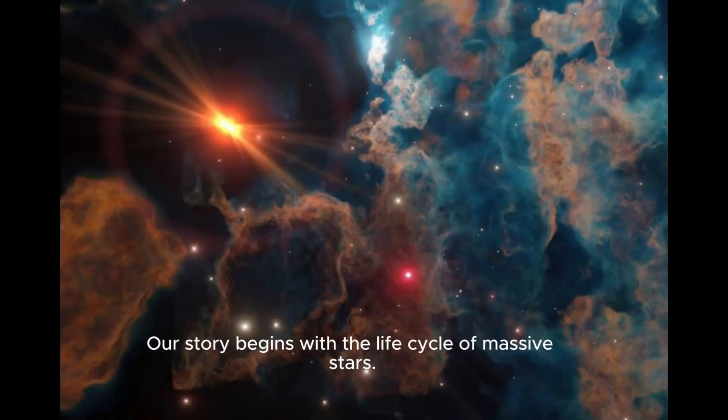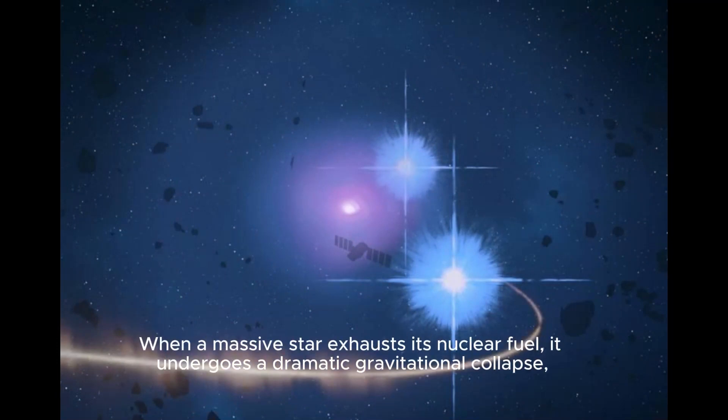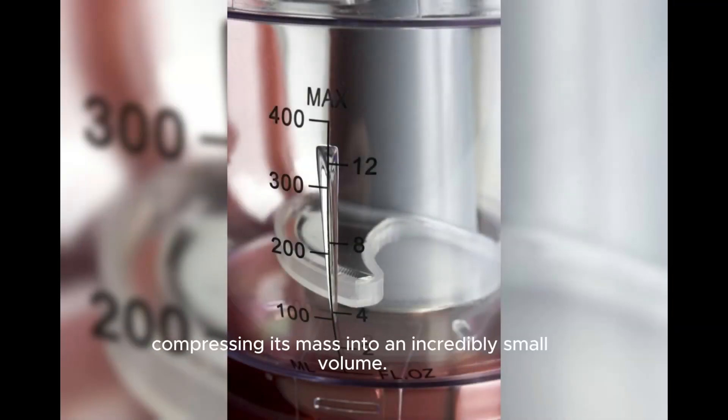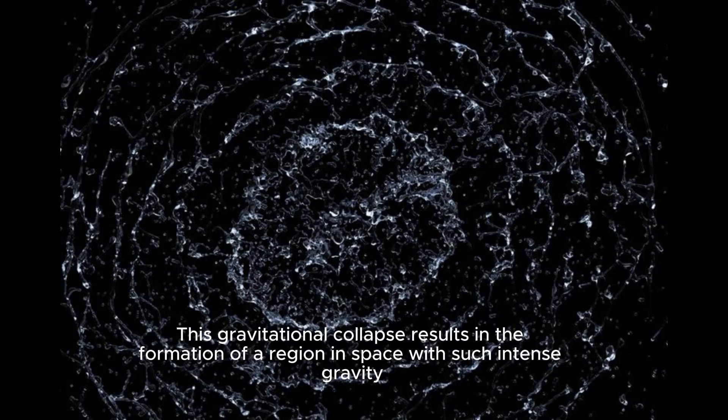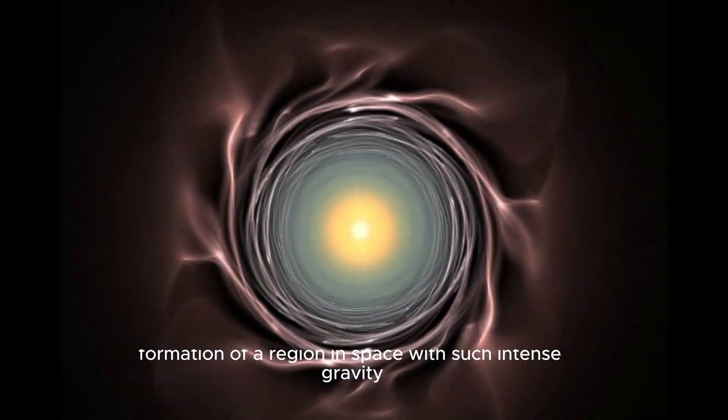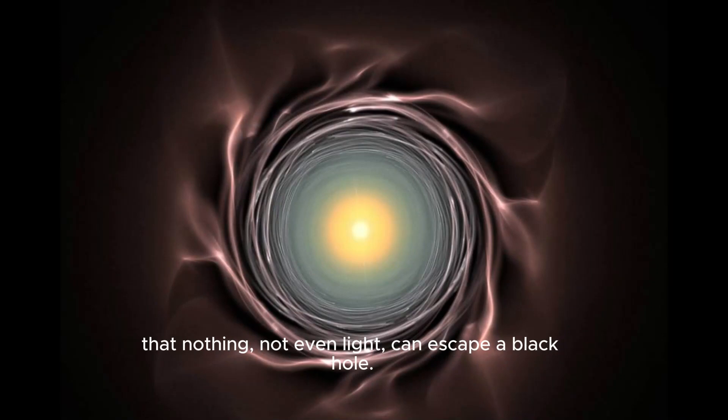Our story begins with the life cycle of massive stars. When a massive star exhausts its nuclear fuel, it undergoes a dramatic gravitational collapse, compressing its mass into an incredibly small volume. This gravitational collapse results in the formation of a region in space with such intense gravity that nothing, not even light, can escape: a black hole.